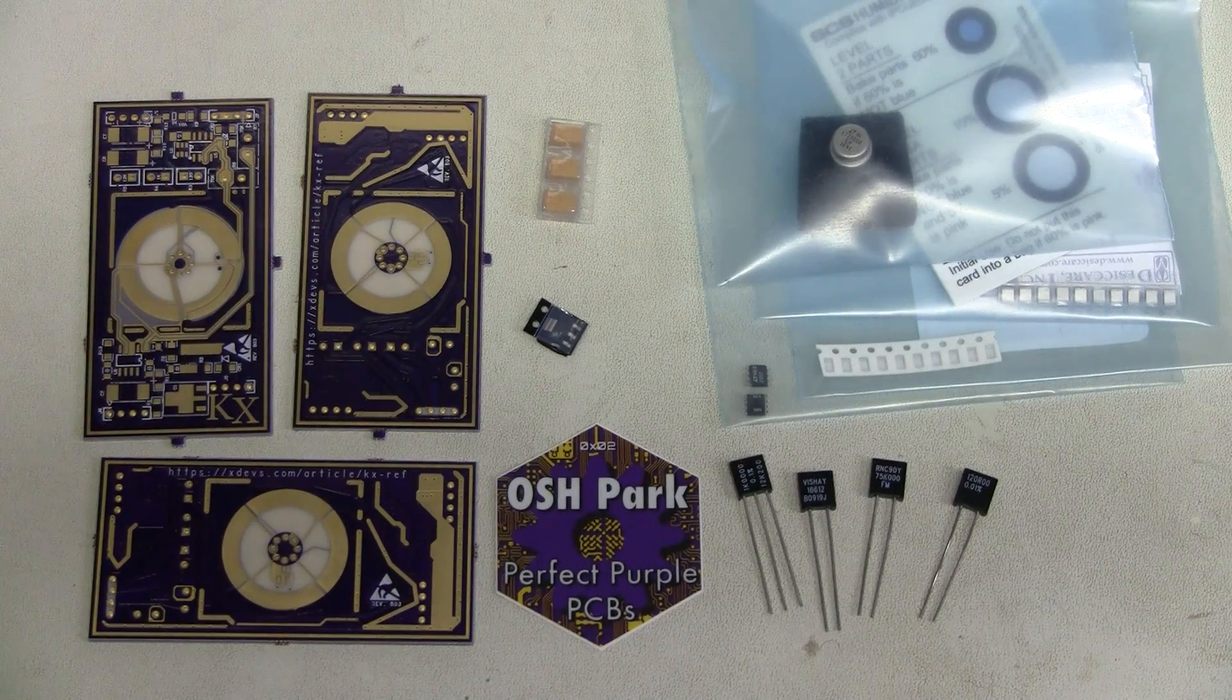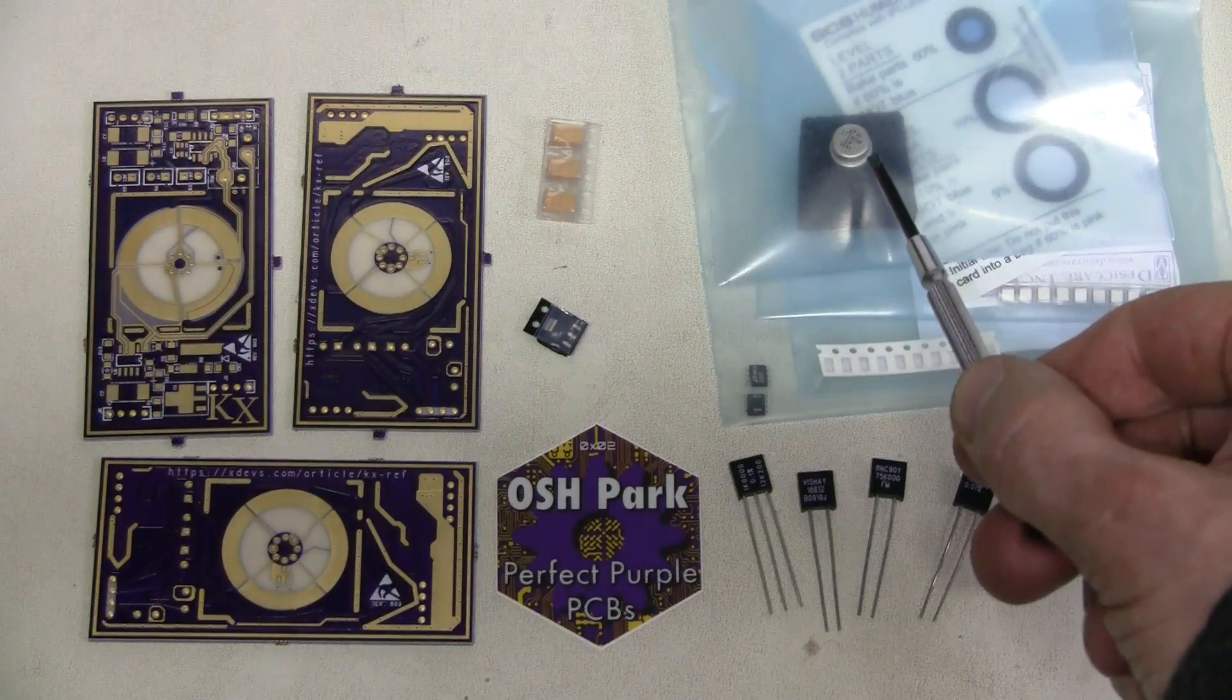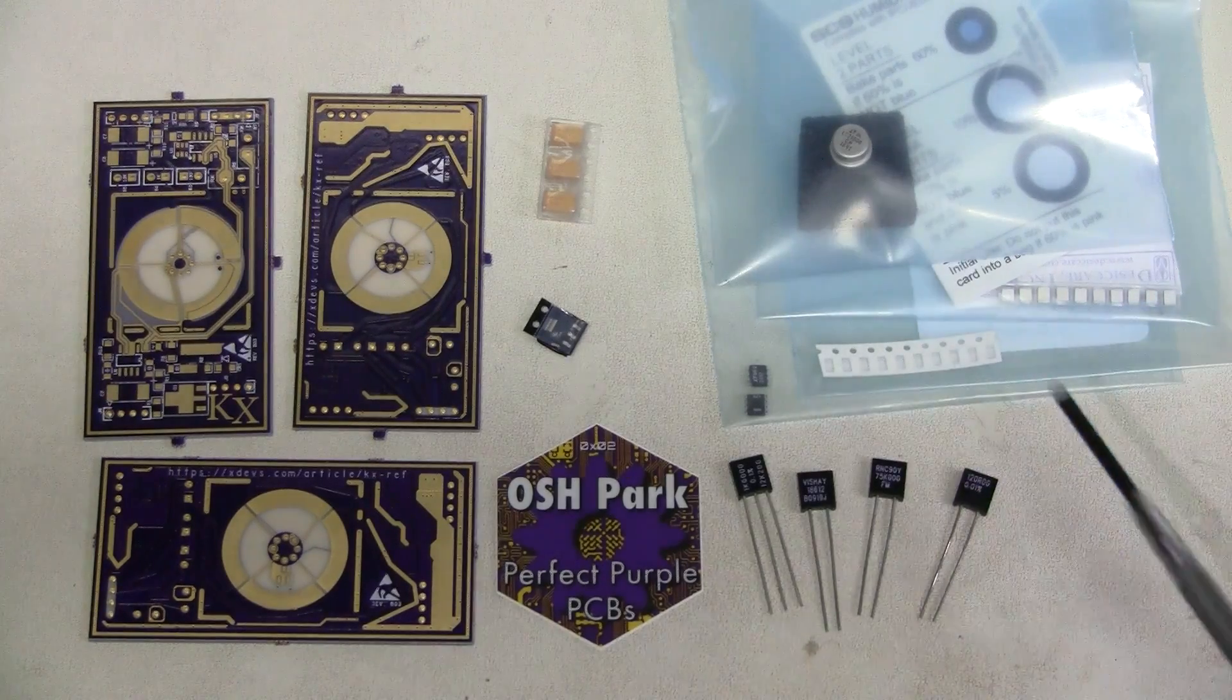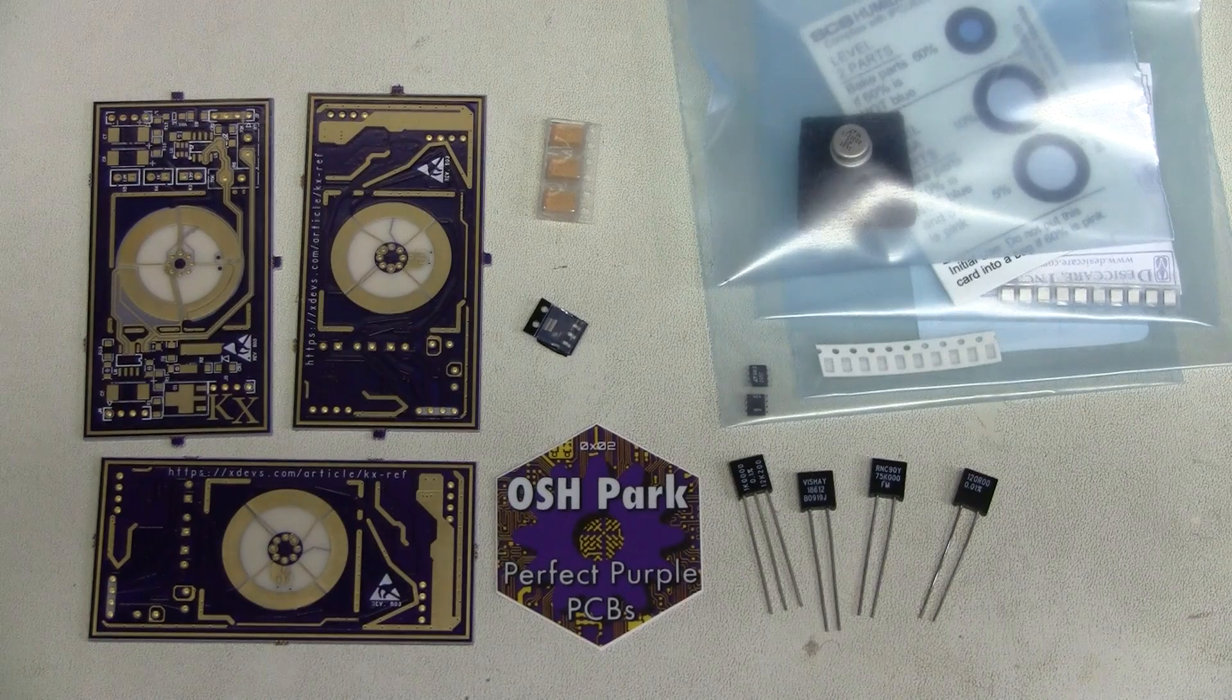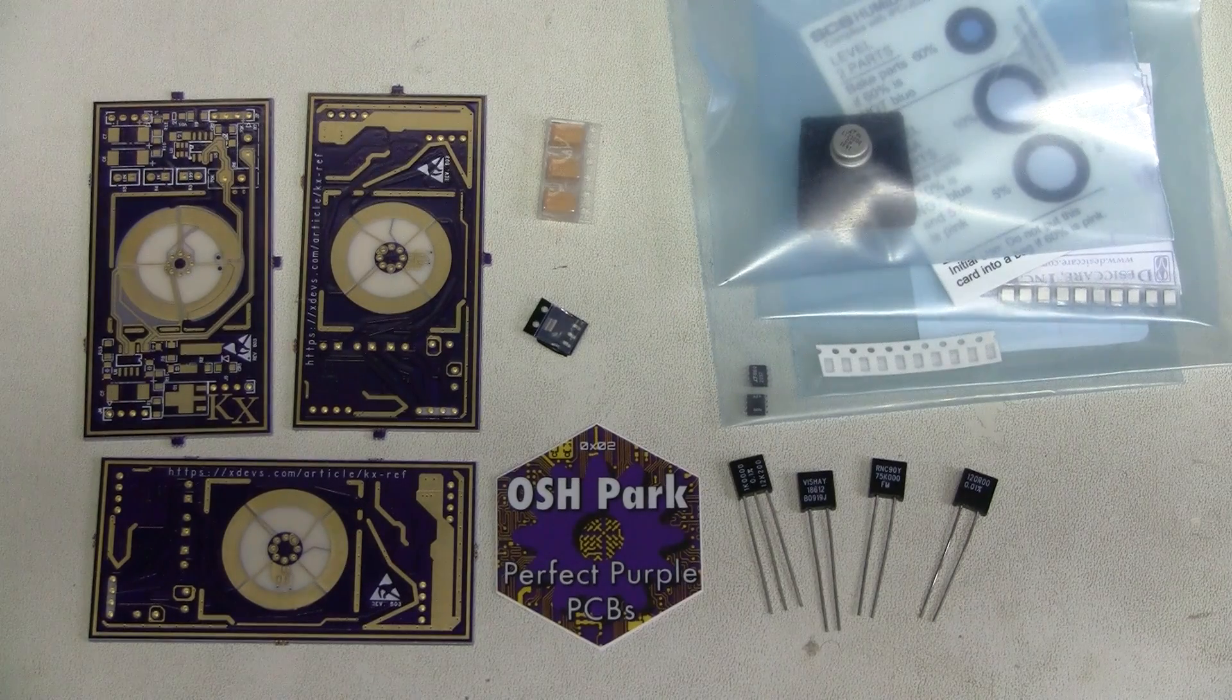The parts are quite expensive. The main part is the LTZ1000 chip. There are two versions, CH and ACH. I bought the cheaper one, which is CH, and it was about $46 from Digikey.